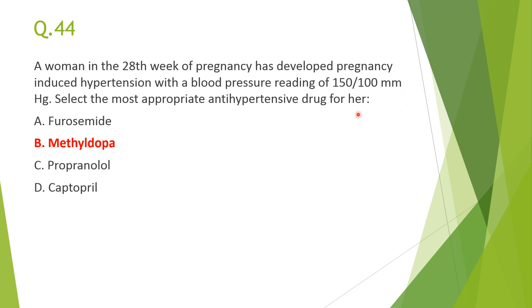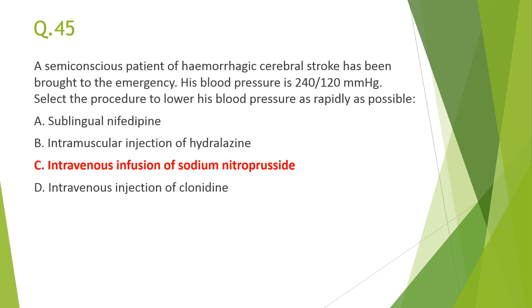Next: a woman at 20 weeks of pregnancy with pregnancy-induced hypertension (150/100) — the most appropriate antihypertensive is B, methyldopa. Furosemide, propranolol, and ACE inhibitors are teratogenic and should not be given to pregnant females. Other drugs that can be given in pregnancy include labetalol and hydralazine.